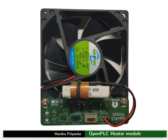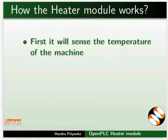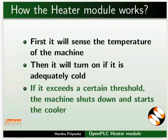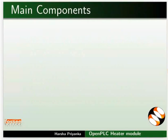You may imagine this setup as a cutting machine used to cut heavy metals. First, it will sense the temperature of the machine. Then, it will turn on if it is adequately cold. If it exceeds a certain threshold, the machine shuts down and starts the cooler. The main components of this module are the fan and PCB.